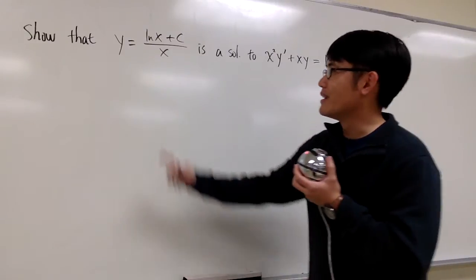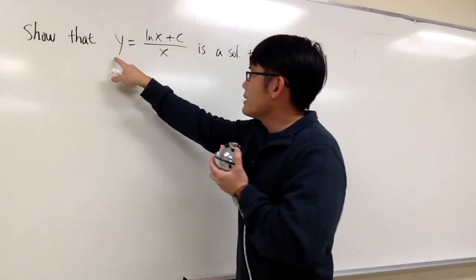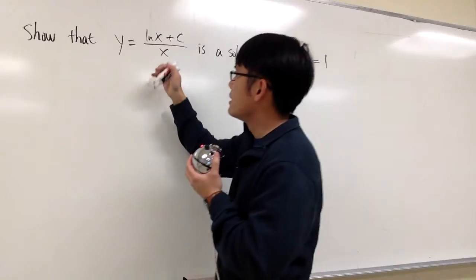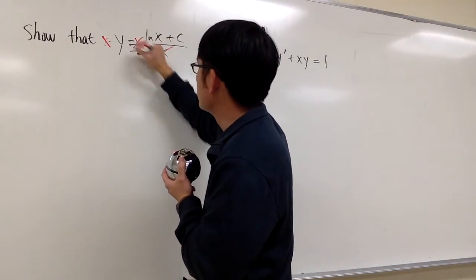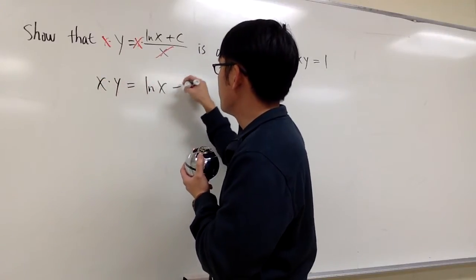However, we don't like to do that because this quotient rule is not going to be that pretty. So this is what we can do. How about let's not look at this as a quotient. We can do that by multiplying both sides by x. So we can multiply x here and multiply x here, so they cancel, and then I have x times y equals ln x plus c.